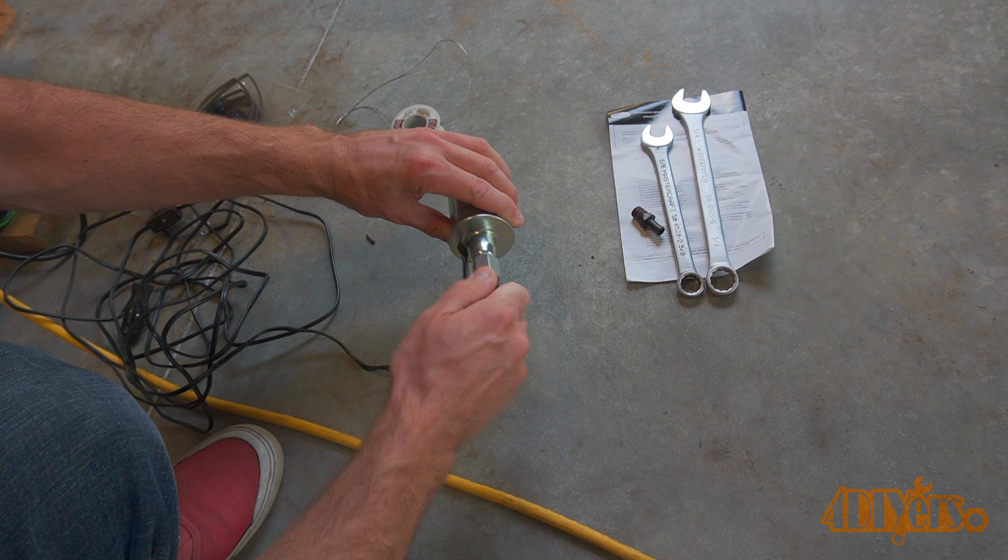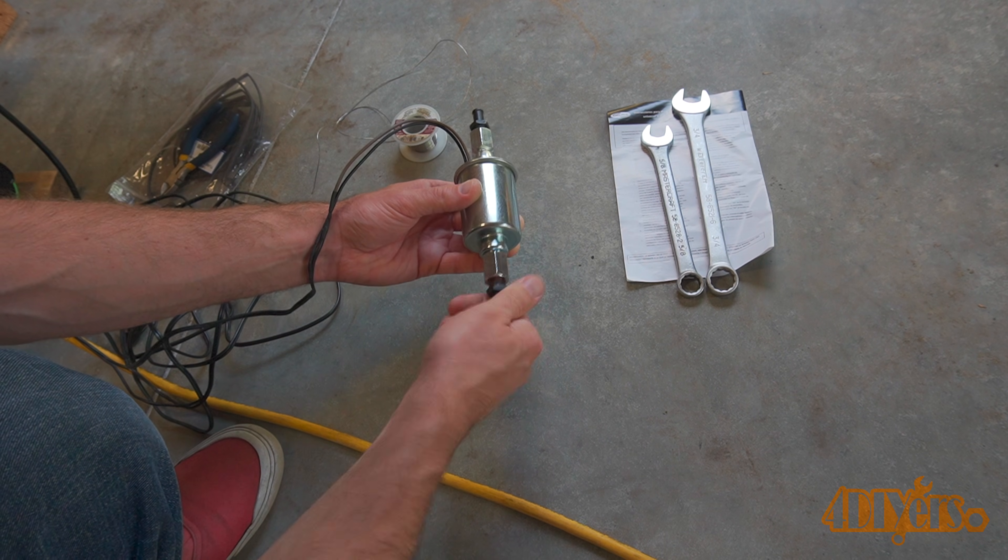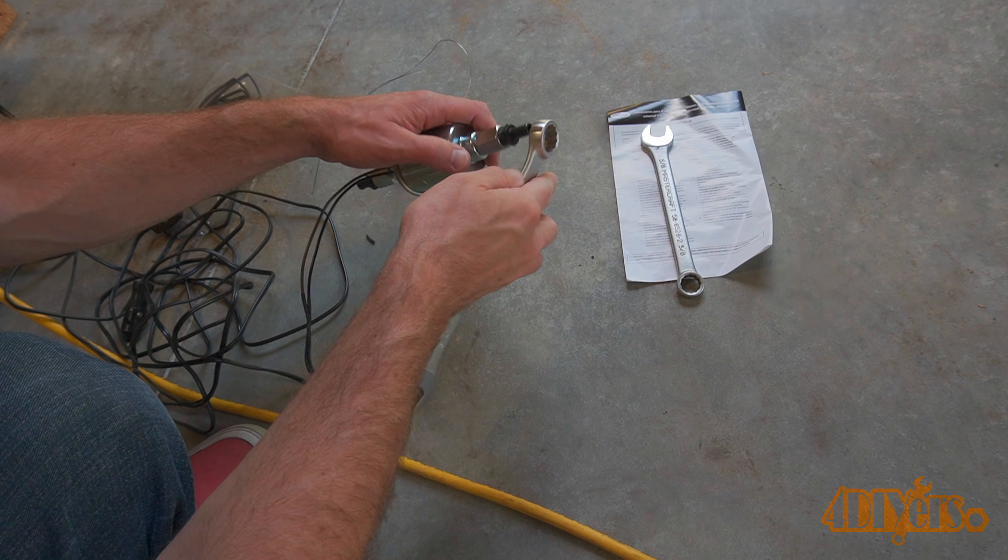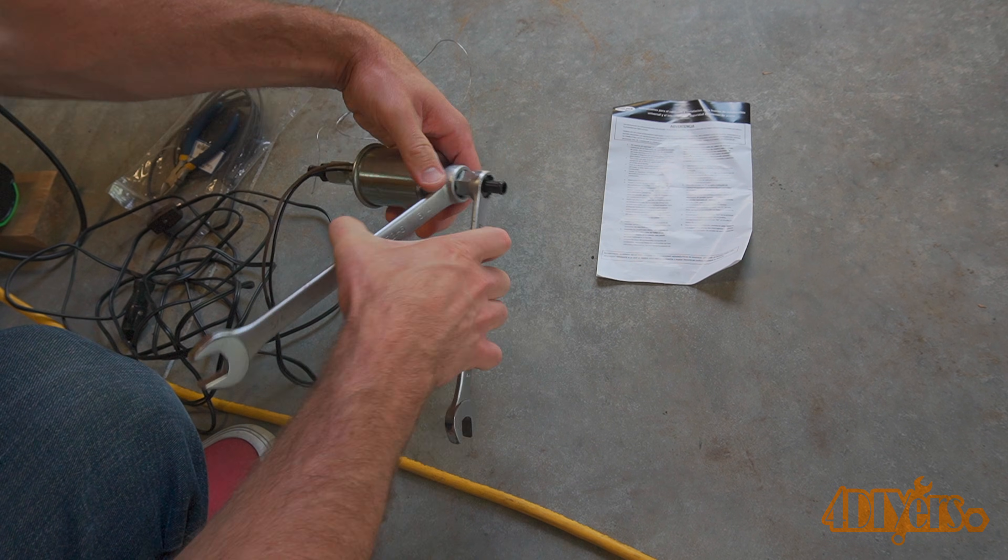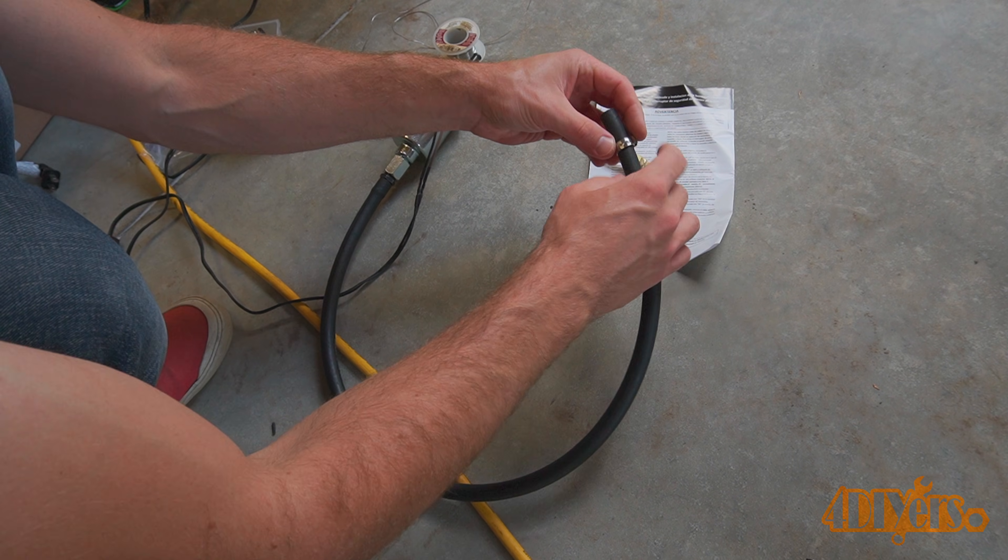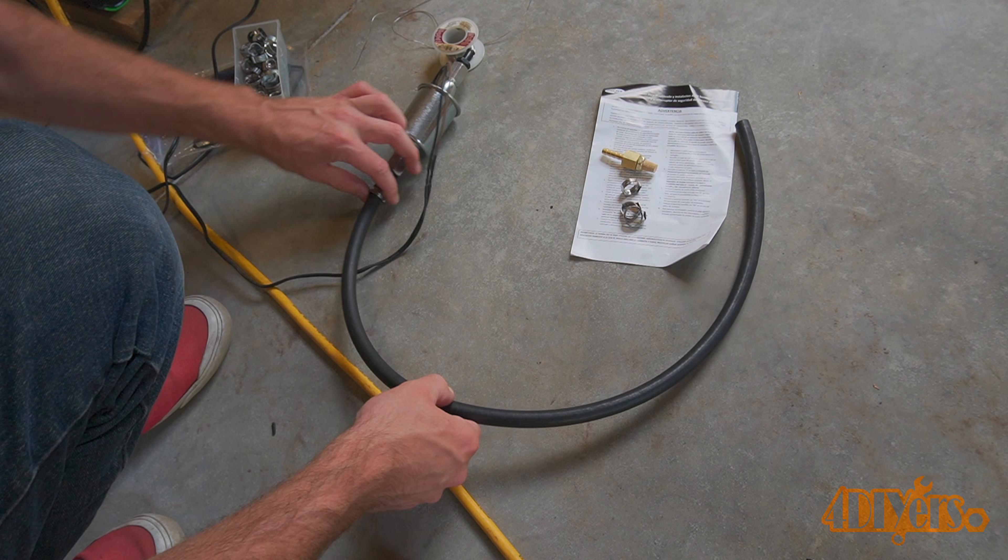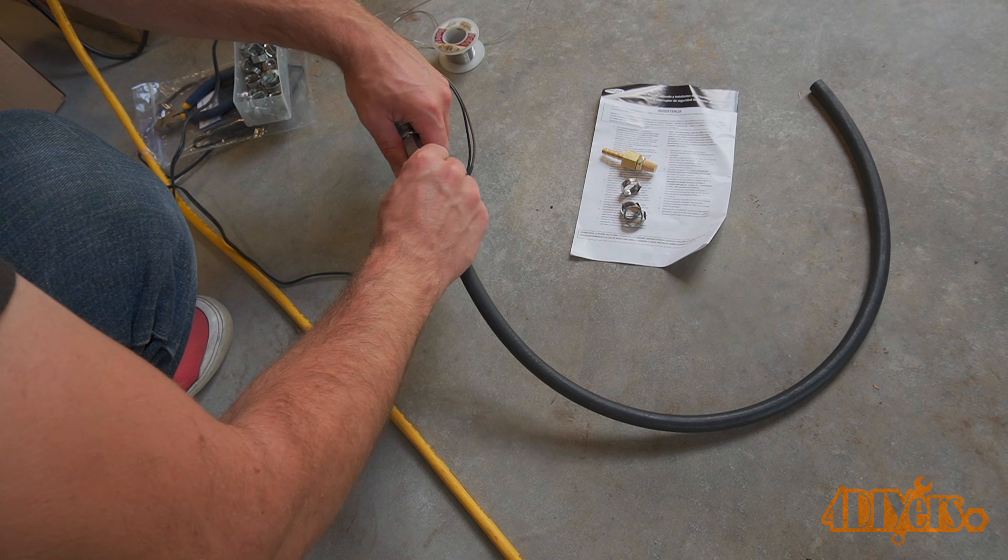The hose barbed fittings already had sealant applied to the threads. Hose sizes may vary based on what type of fittings are being used with the fuel pump. A single ear clamp is used and that is crimped into place. Again, the size of that clamp will vary based on the size of hose.